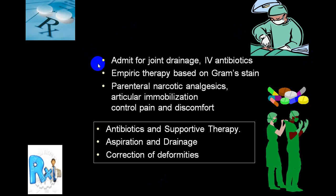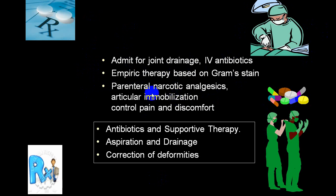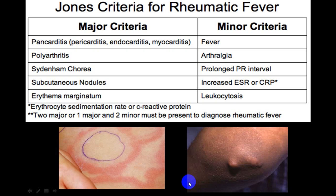Treatment of septic arthritis: joint drainage, IV antibiotics (empiric therapy before gram stain results), analgesics, and articular immobilization for symptomatic relief. Antibiotic and supportive therapy is essential. Aspiration and drainage must be performed. Correction of deformity is needed if already developed.